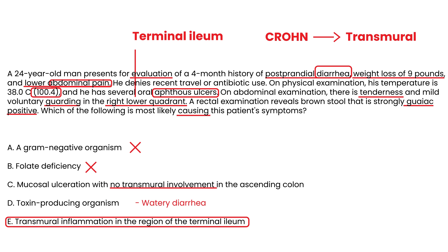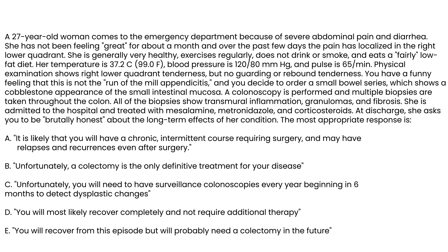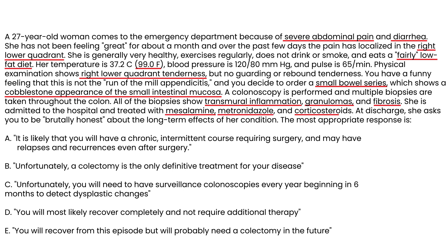Vignette 2: A 27-year-old woman comes to the ER with severe abdominal pain and diarrhea worsening over a month, now localized to the right lower quadrant. Temperature is 99°F; blood pressure and pulse are normal. A small bowel series shows cobblestone appearance of the small intestinal mucosa. Colonoscopy biopsies show transmural inflammation, granulomas, and fibrosis. She is treated with mesalamine, metronidazole, and corticosteroids. At discharge she asks about the long-term prognosis — the correct answer is A.